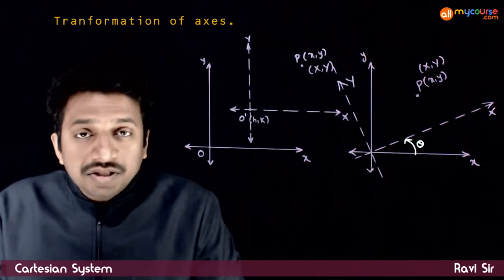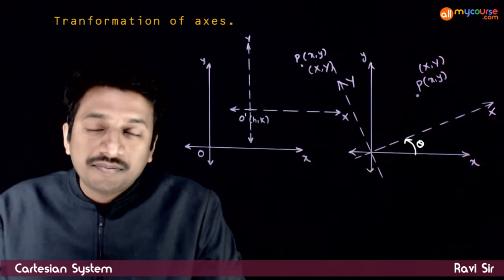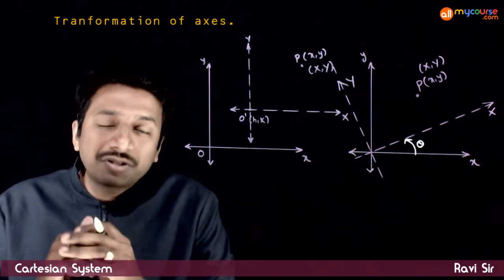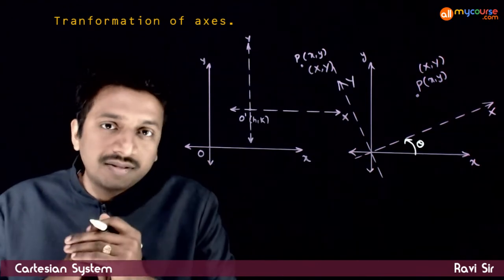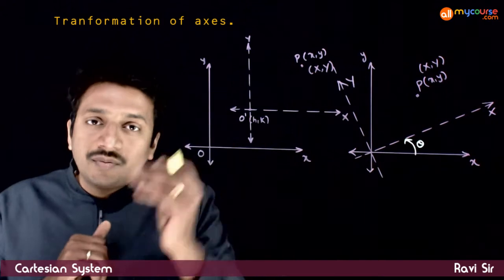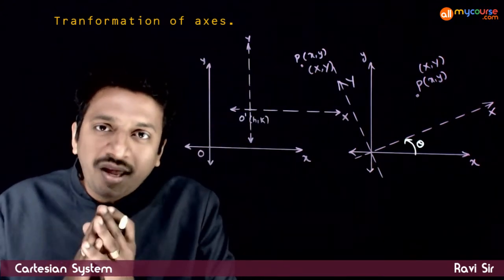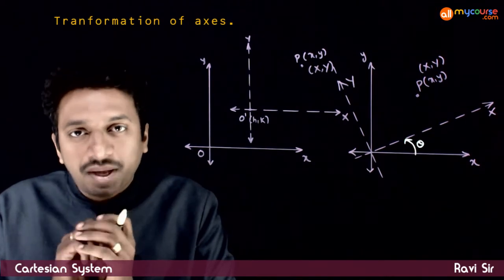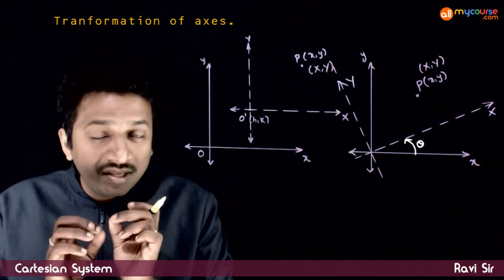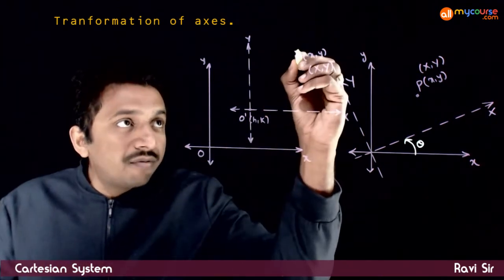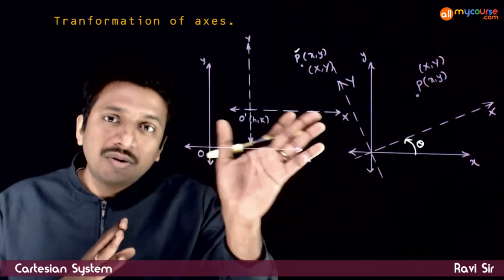Welcome students. In this topic, let us look at the transformation of axis. We have already seen the basics of the Cartesian coordinate system — if you have a coordinate system containing an x-axis and y-axis, every point in this plane can be represented by a unique ordered pair. Now, what we are going to learn in this topic is how the coordinates of a point change as we change the coordinate system.